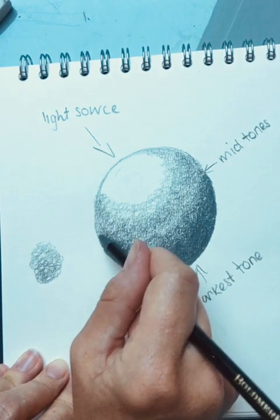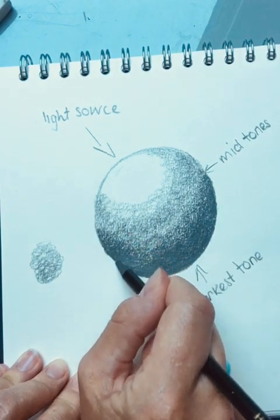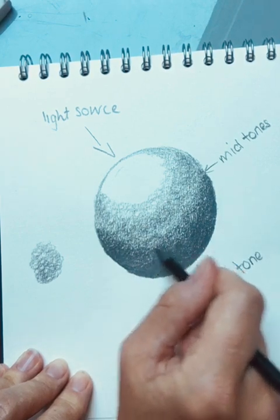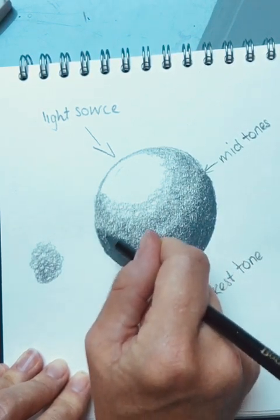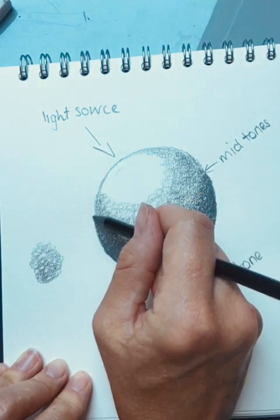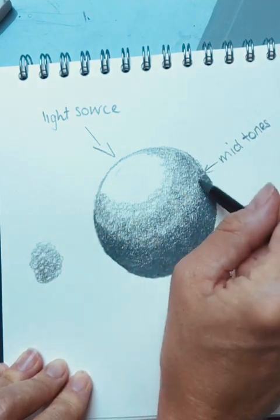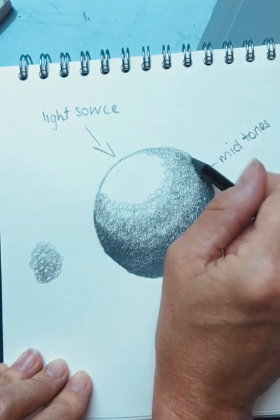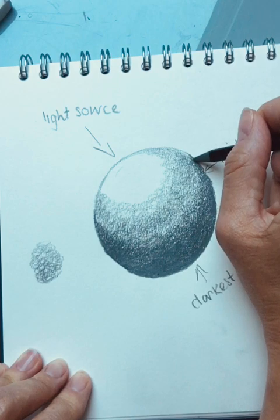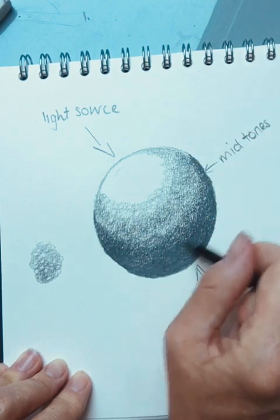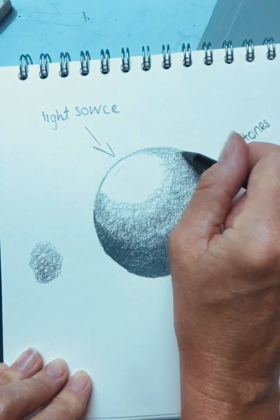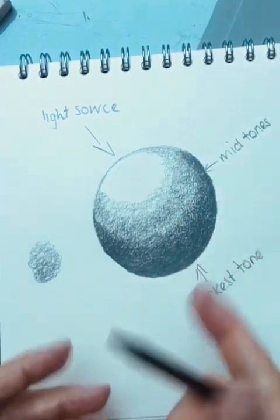So you can see already we've created our sphere shape. We've created our sphere shape in the form of a circle, which is a sphere in 2D form. Now what I'm going to do, and if you don't have one of these blending tools, then just use your fingers.